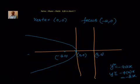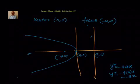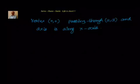Next: vertex (0, 0), focus (-2, 0). The focus is to the left, so the directrix is the line x = 2, parallel to the y-axis. The axis of the parabola is the x-axis, and since it opens to the left, the equation is y² = -4ax. With a = 2, we get y² = -8x.